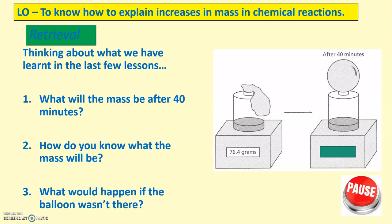So under retrieval, there are three questions. First question, number one, what will the mass be after 40 minutes? Number two, how do you know what the mass will be? And number three, what would happen if the balloon wasn't there? These three questions are relating to the diagram shown here. Your first task is just to pause the video for three minutes, and on your piece of paper, can you please answer those three questions in full sentences?